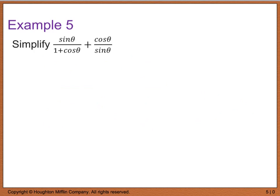Example 5: simplify sine theta divided by 1 plus cosine theta plus cosine theta over sine theta. This is no different than adding any other fractions — we still need to find a common denominator. Our common denominator will be the product of the two denominators.